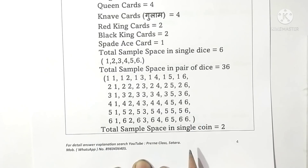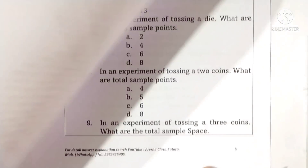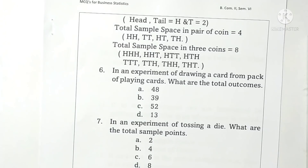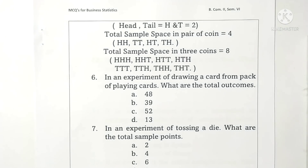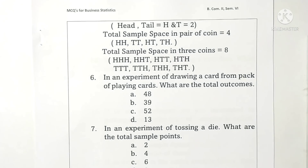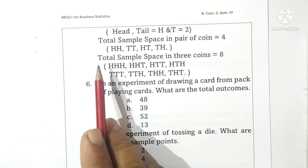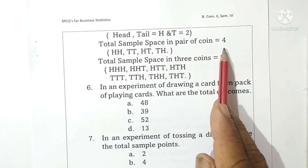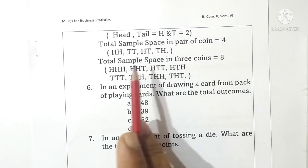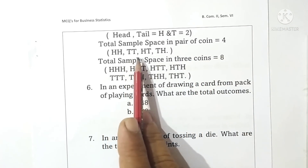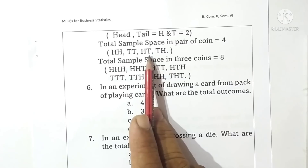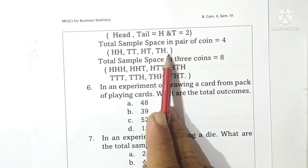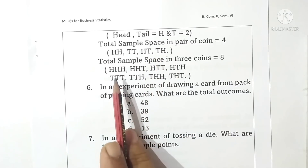Total sample space in a single coin are two, namely head or tail. Total sample space in a pair of coins is four: head-head, head-tail, tail-head, tail-tail.